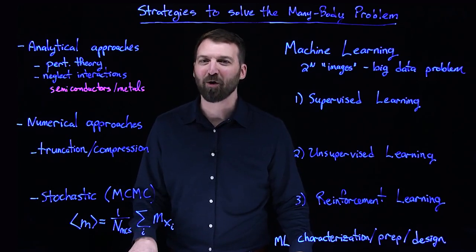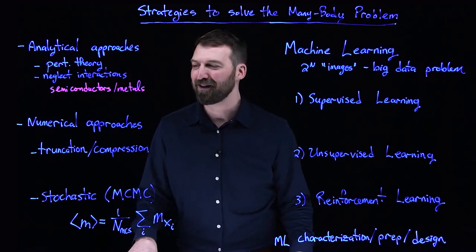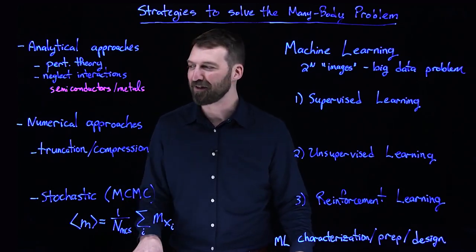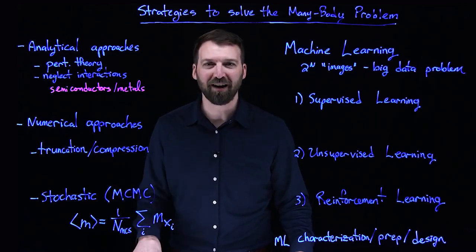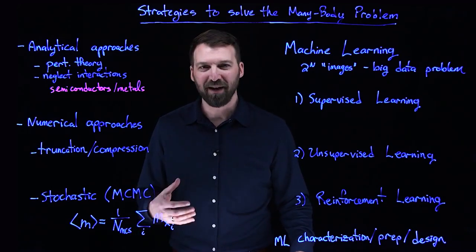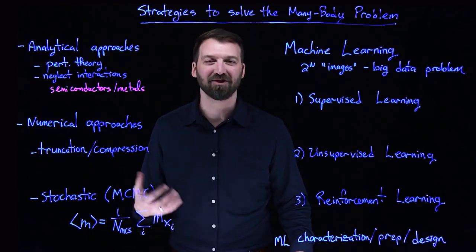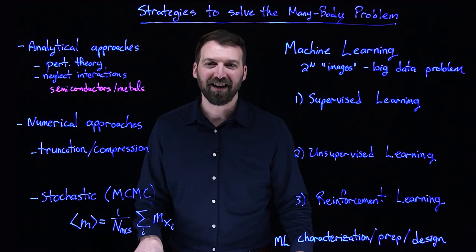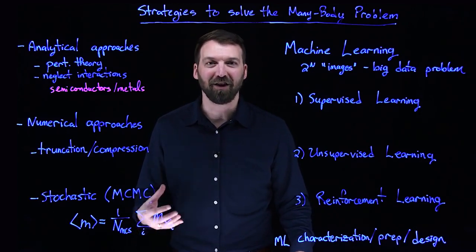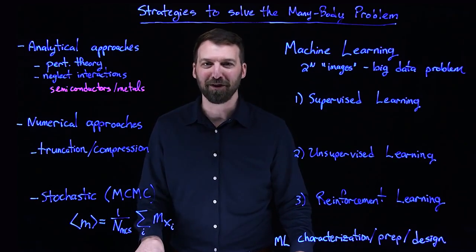So in the strongly correlated regime of materials, quantum chemistry and devices, we're much more reliant on numerical methods. So I mentioned exact diagonalization, which has an exponential scaling problem. In many cases, that is still your best technology, if you will, for solving the many-body problem.